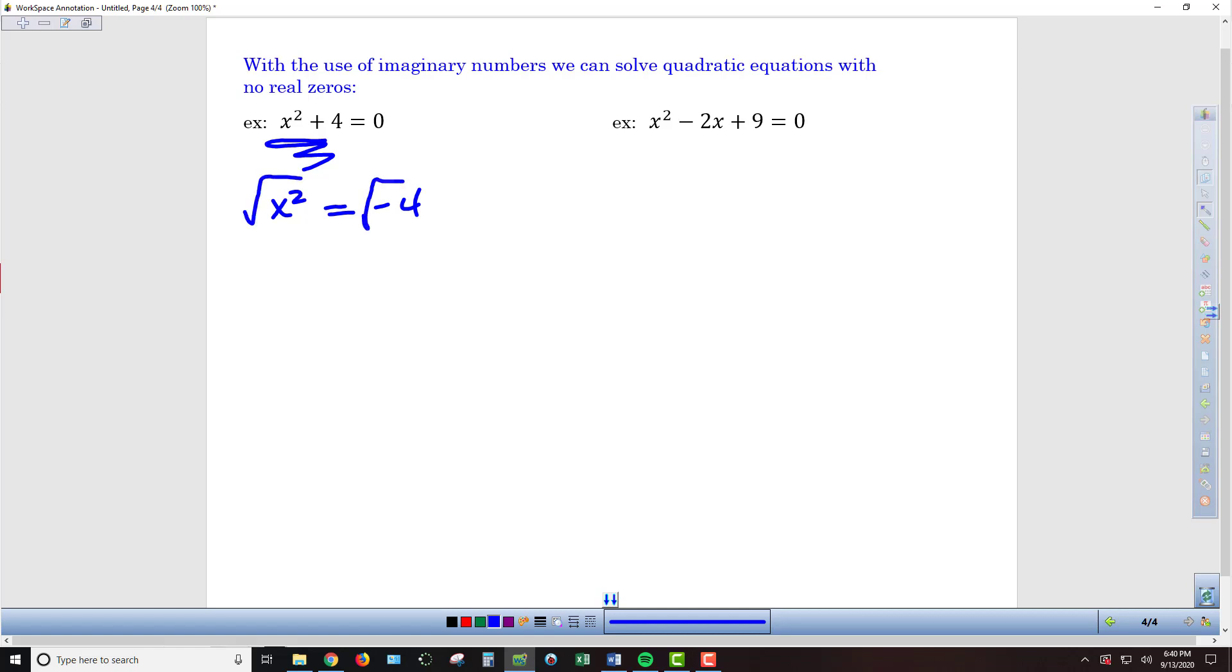Now we take the square root of both sides, so we get x on the left. On the right hand side we need the plus or minus since we're taking the square root of both sides of an equation. Then I need to simplify this √-4 by taking √-1 and separating it from √4.